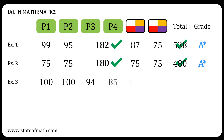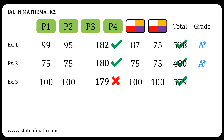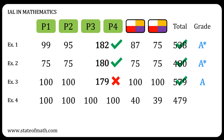Although the first student performed better than the second student overall, they still received the same grade. And now it gets interesting. In example three, the total UMS is more than 480, but the total of P3 and P4 is less than 180 by one mark, so the grade awarded is A without a star. In example four, although the total of P3 and P4 is the maximum possible, the total UMS is one less than 480, so the grade awarded is B.